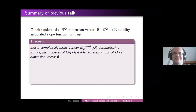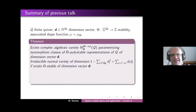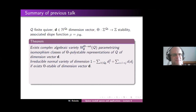So what do we know about these complex algebraic varieties? As I already said on Monday, they are always irreducible normal varieties, and we know the dimension. It's given by the same formula as in the semi-simple case: 1 minus sum over all d_i squared plus sum over all arrows d_i d_j. This is the expected dimension, and it is the actual dimension if there exists a theta-stable representation of dimension vector d.